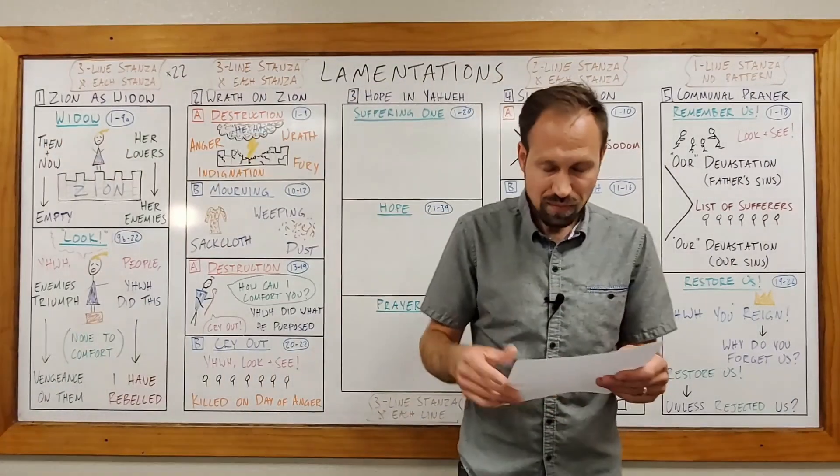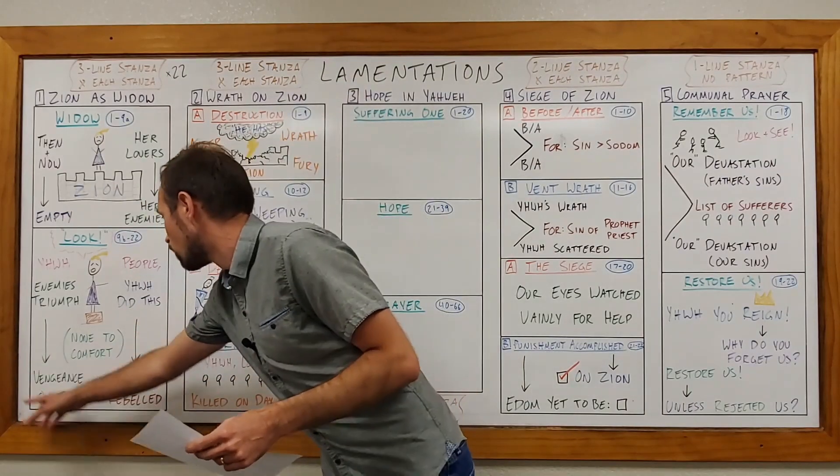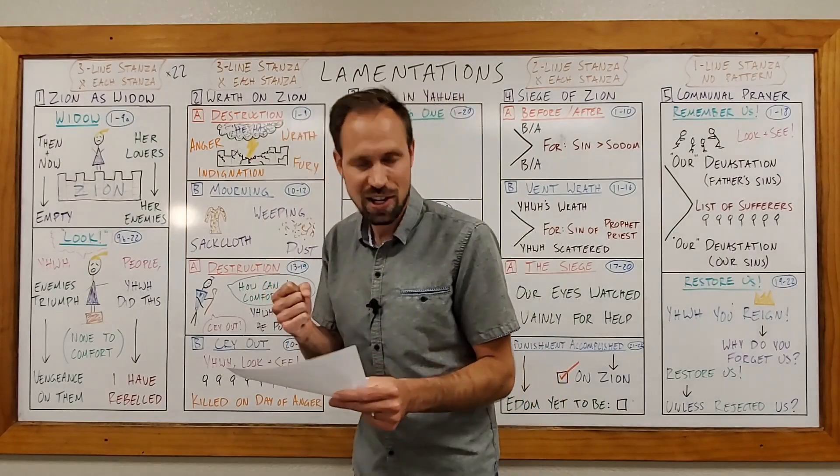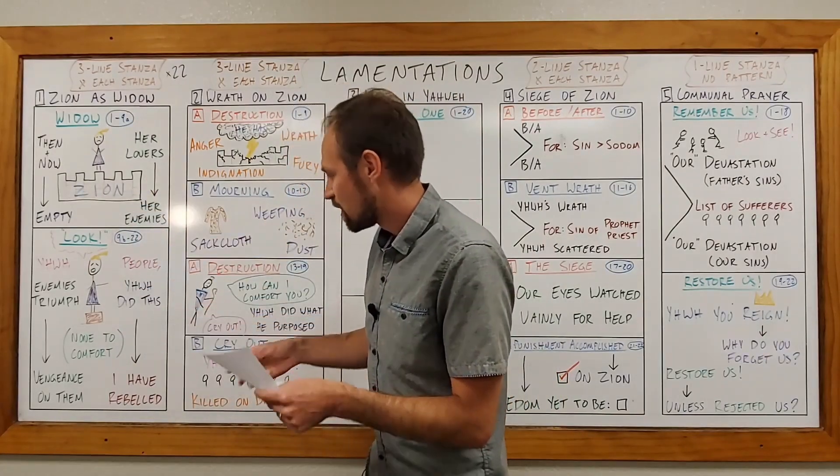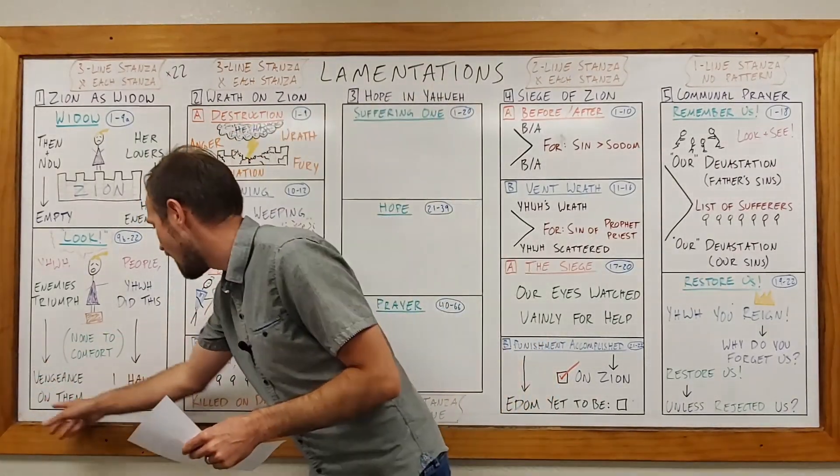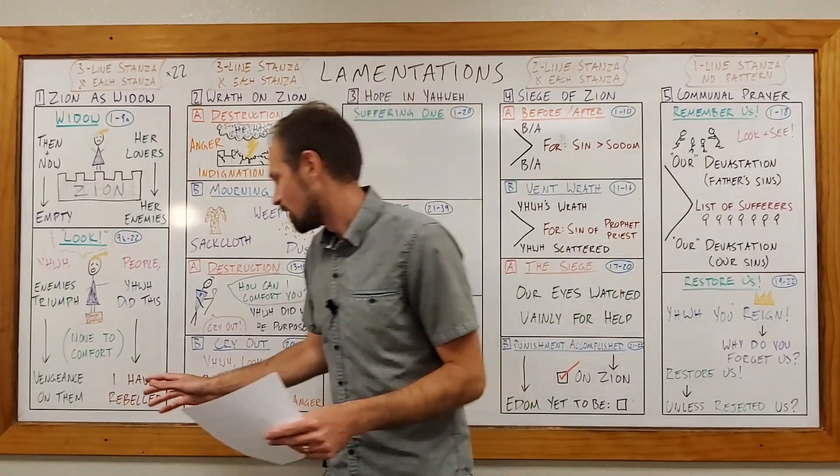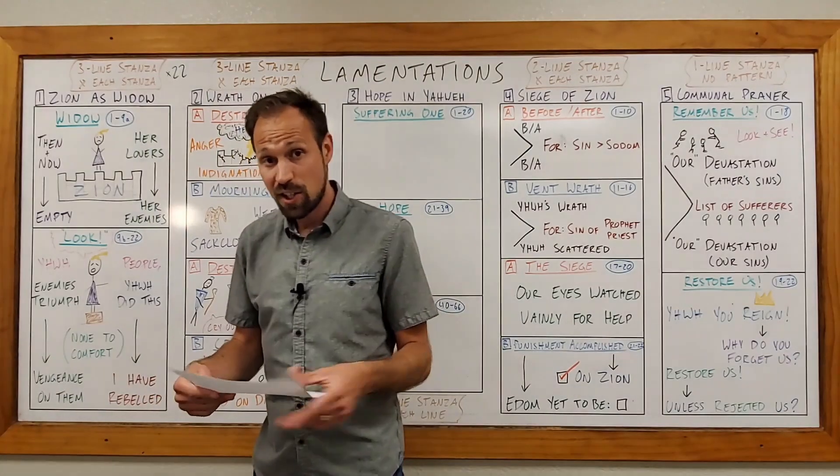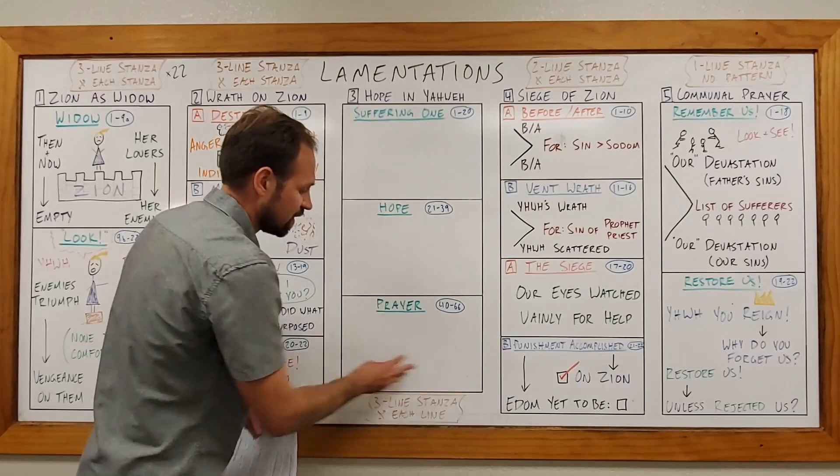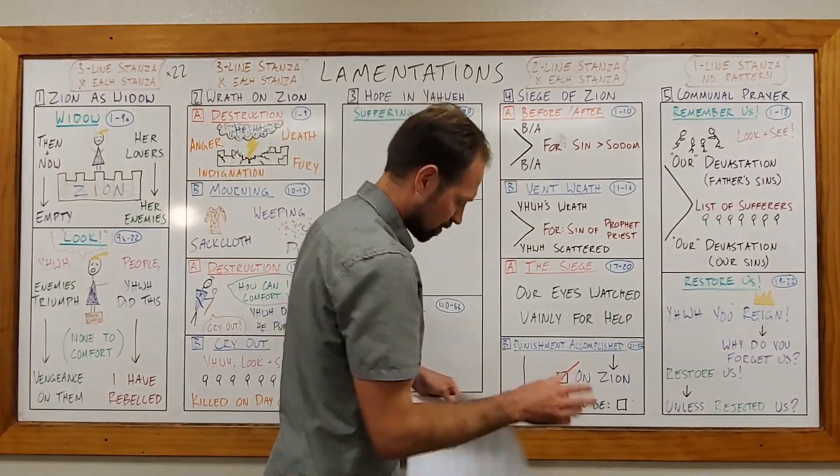Well, Lady Zion is going to close her speech here in the final verses of chapter 1 by calling for God to inflict vengeance against her enemies. And actually, this call for vengeance against enemies is going to be repeated at the end of several of these poems in Lamentation. We're going to see that in chapter 3, and then it's here with Edom in chapter 4 as well.